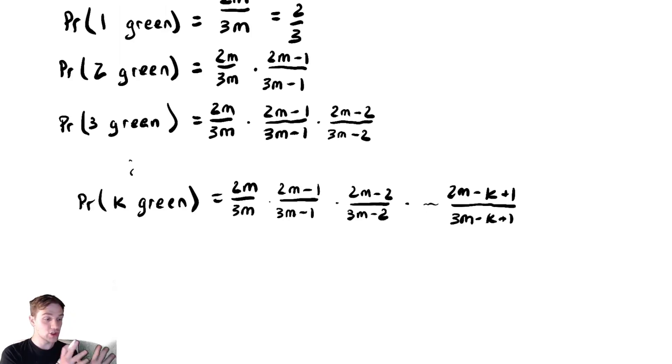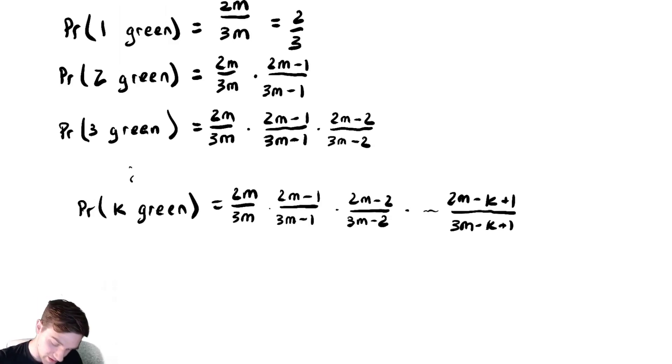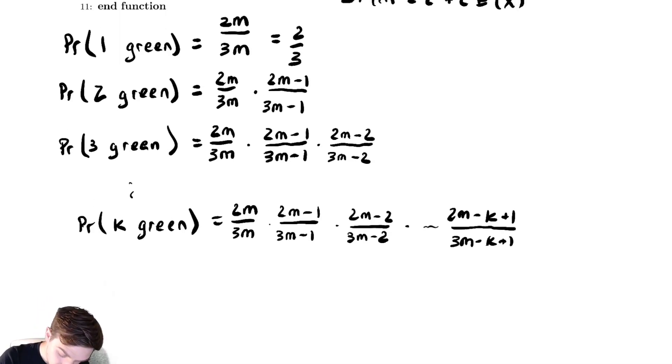So this looks like a nightmare to begin with, but we can actually do something nice with bounding these expressions. So this second expression here is less than or equal to 2 over 3 times 2 over 3 times 2 over 3. The last one is less than or equal to 2 over 3 to the k.